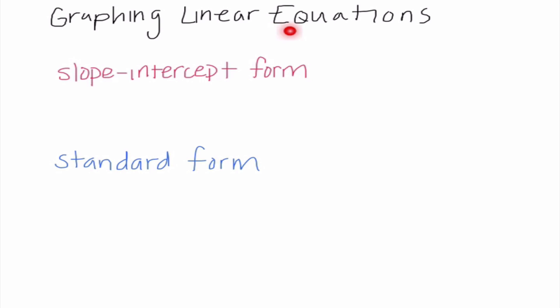An equation means we do have an equal sign. Linear means that it is going to form a straight line, a continuous slope. And when we're graphing linear equations, there are two different ways that you probably have learned before.